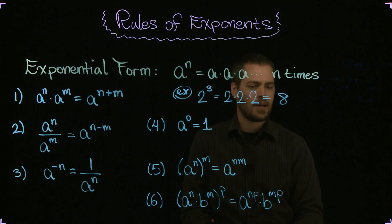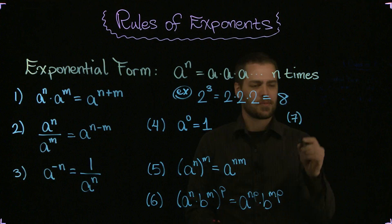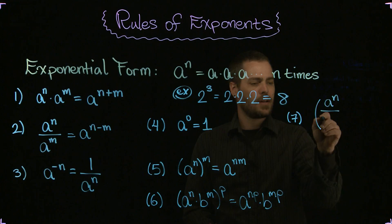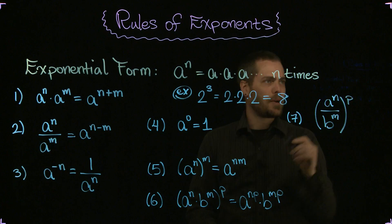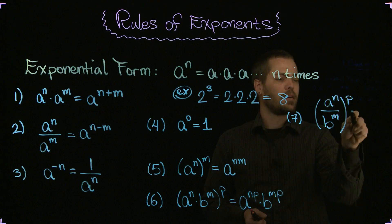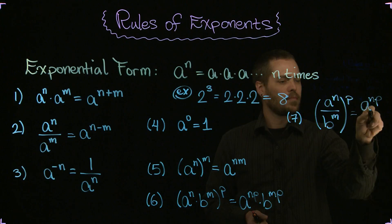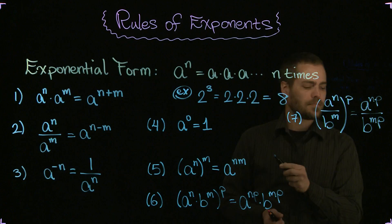Here's another one, rule number seven. We can say that, like this one, suppose we had a fraction a to the n over b to the m, and all of that is raised to the p power. Well, it turns out that you can distribute this power to the powers the same way we did here, and that gives me a to the np on top over b to the mp on the bottom.